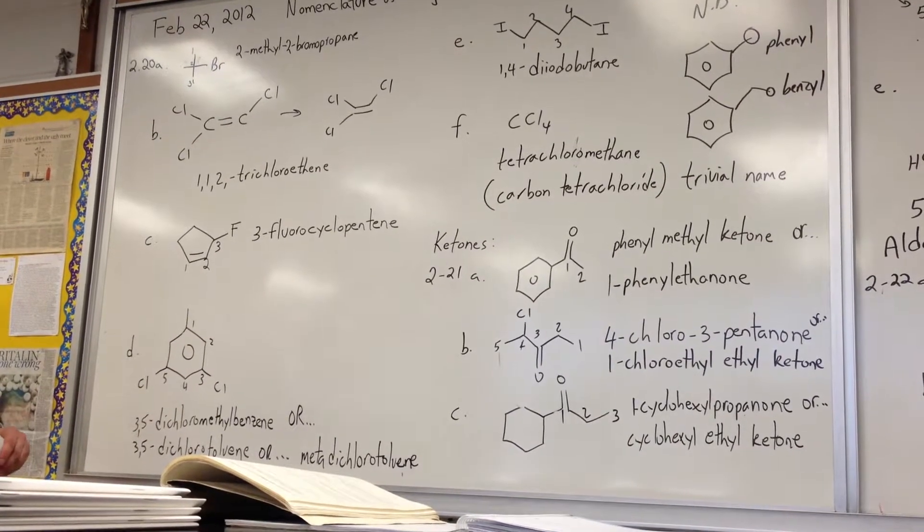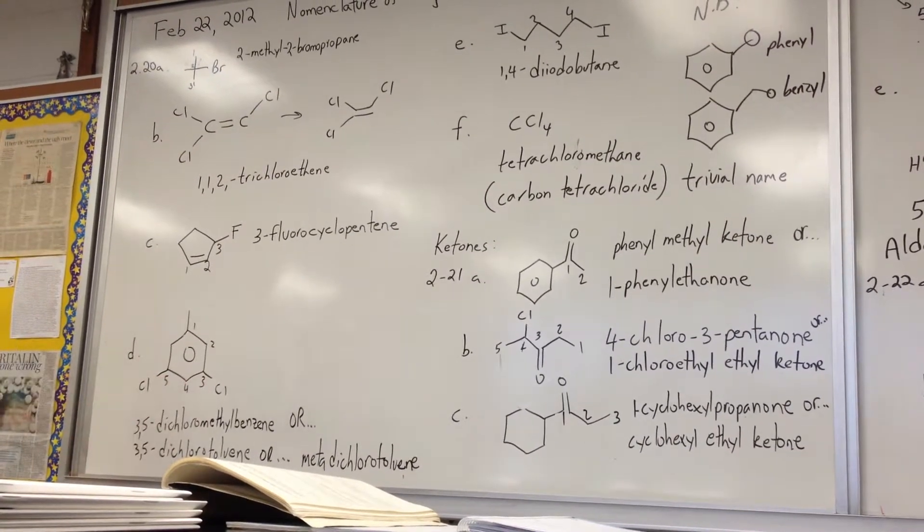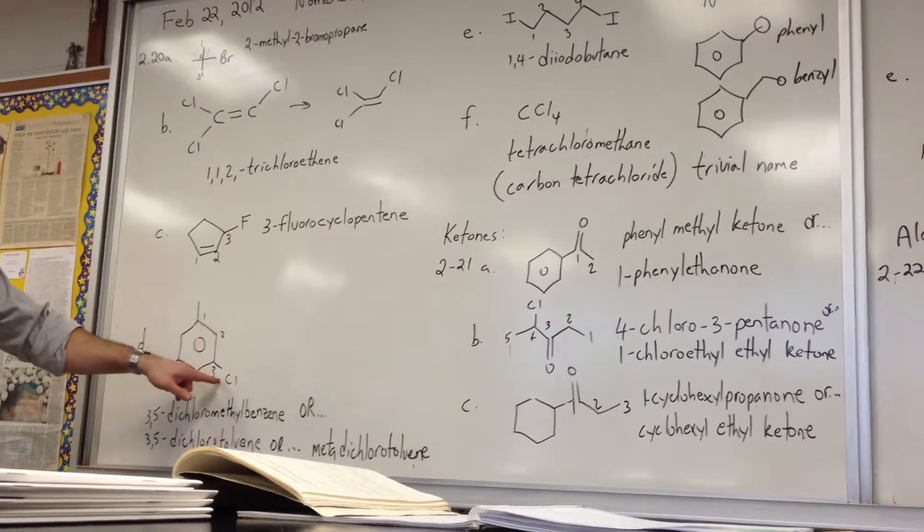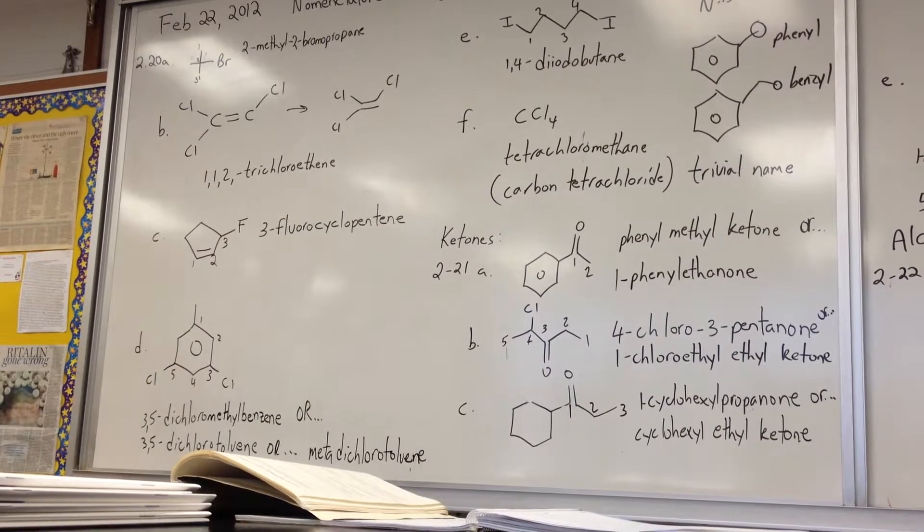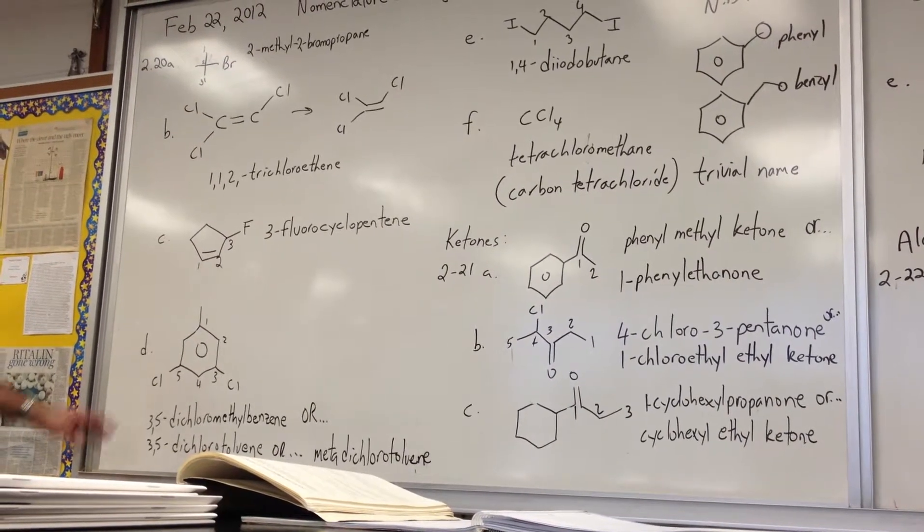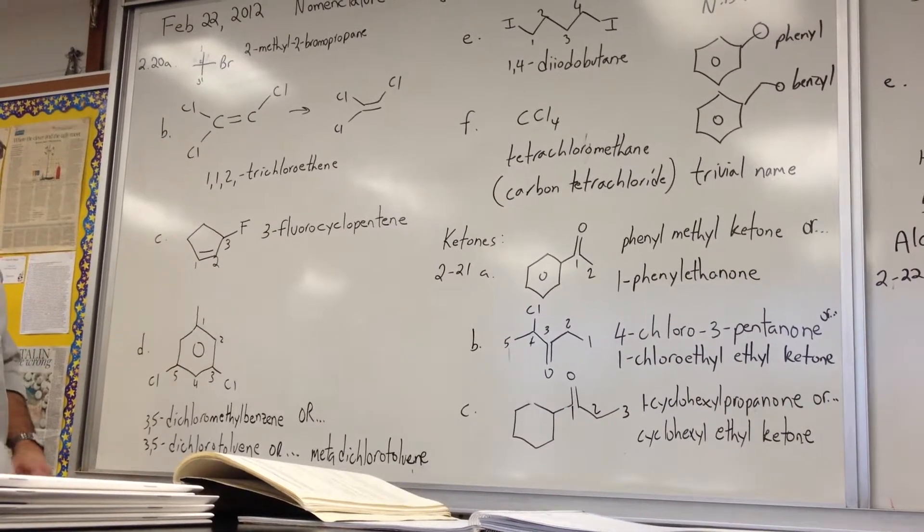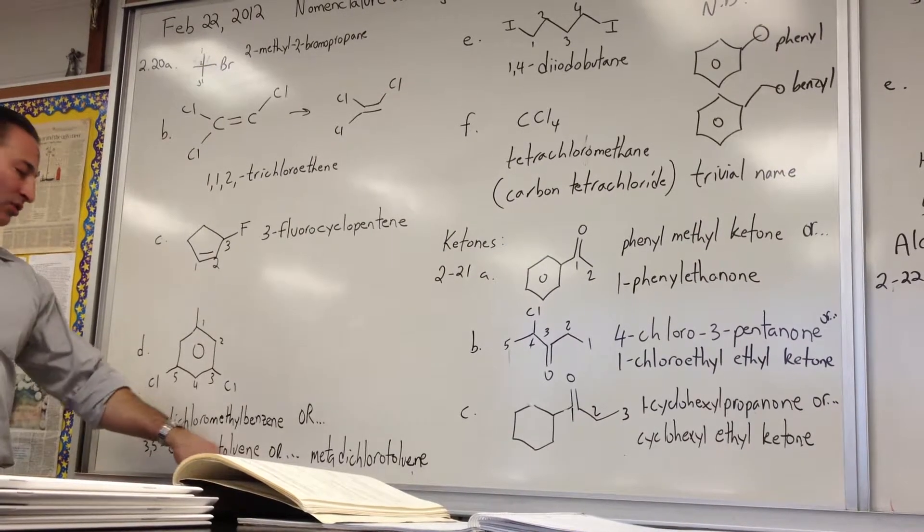The fourth example, D, is a benzene ring substituted with two chlorine atoms. The alkyl group takes precedence over the halides, so the first position is where the methyl group is. Benzene with a methyl group has its own name. It has a trivial name. It's called toluene.